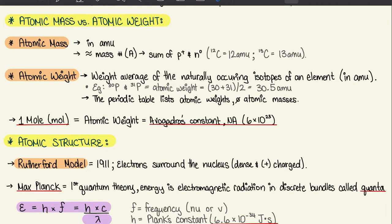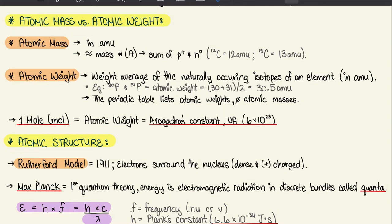For atomic weight, it's the weighted average of the naturally occurring isotopes of the element, and the units are also in AMU. So we have phosphorus-30 and phosphorus-31. We take the weighted average: 30 plus 31 divided by 2 gives us 30.5 AMU — that would be your atomic weight. The periodic table lists atomic weights and not atomic masses, so it works in our favor.